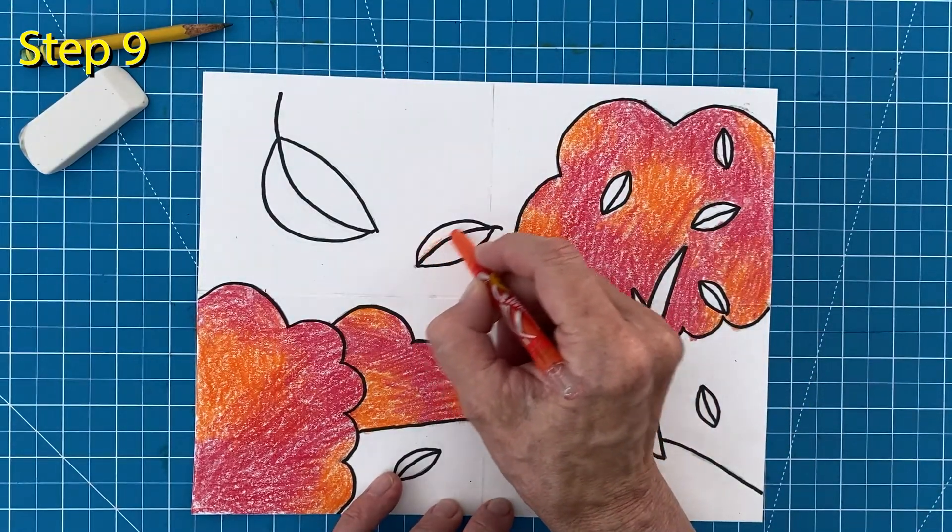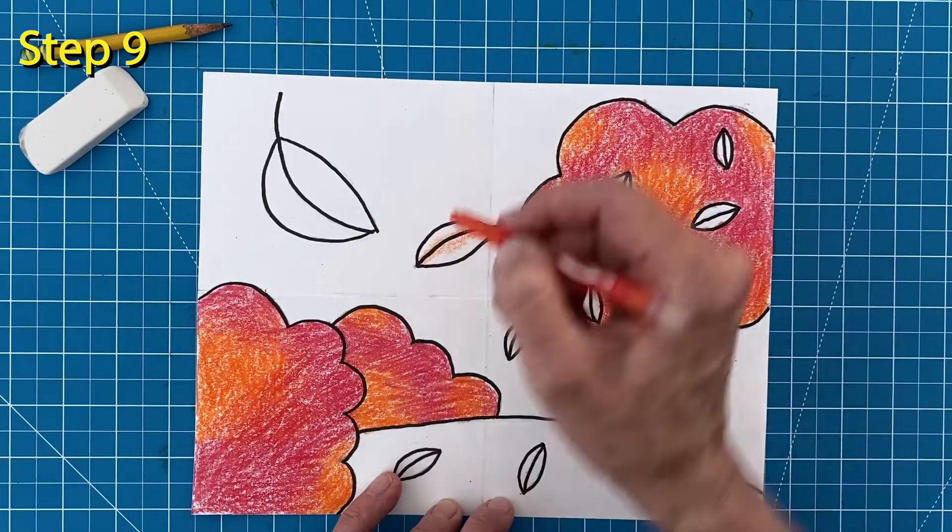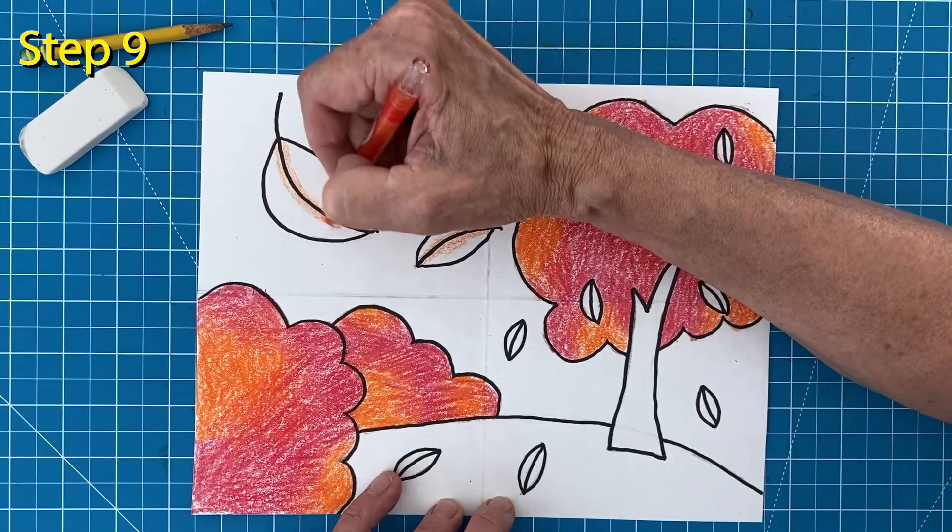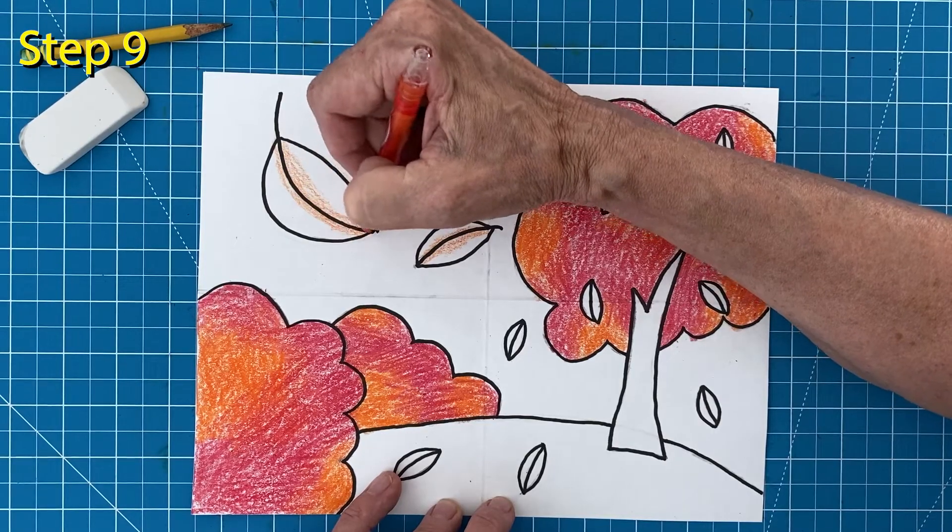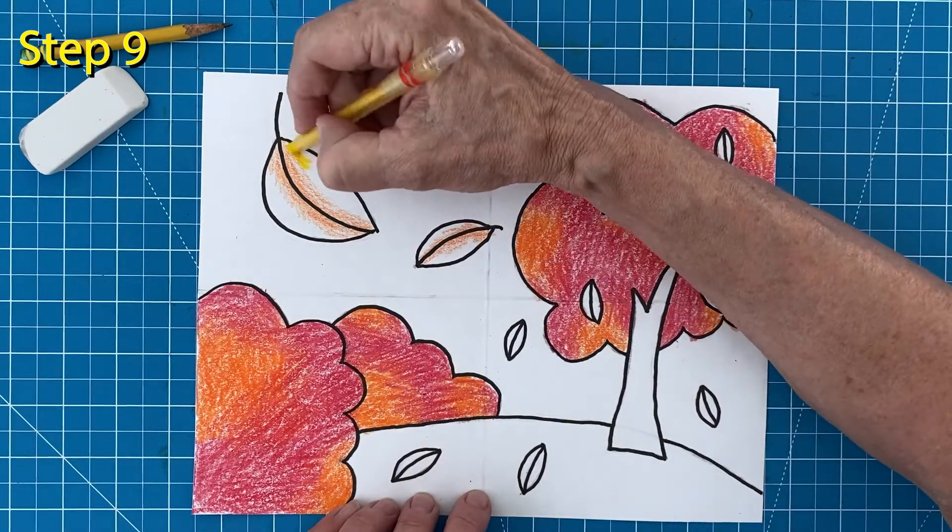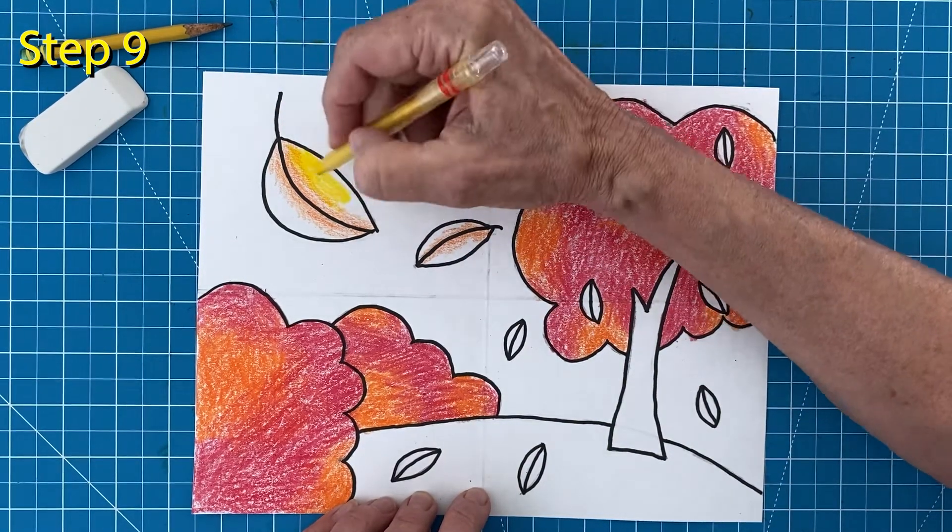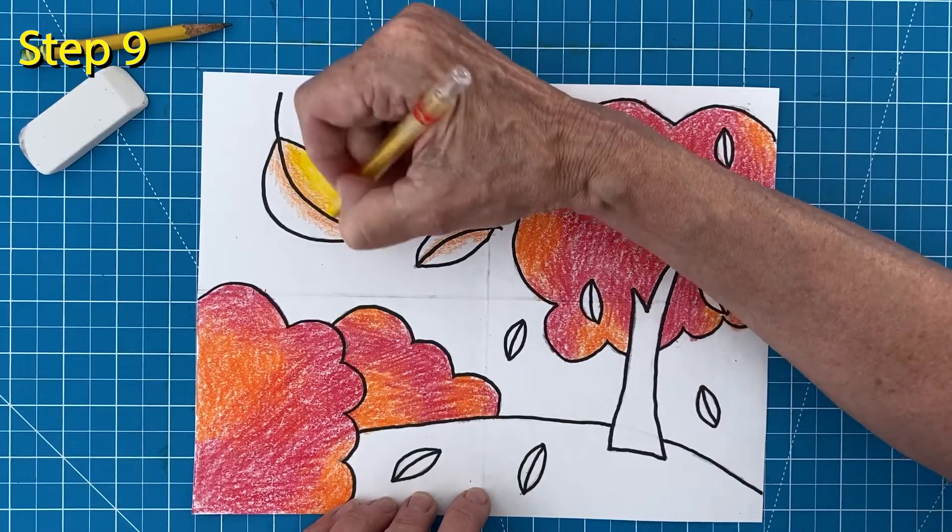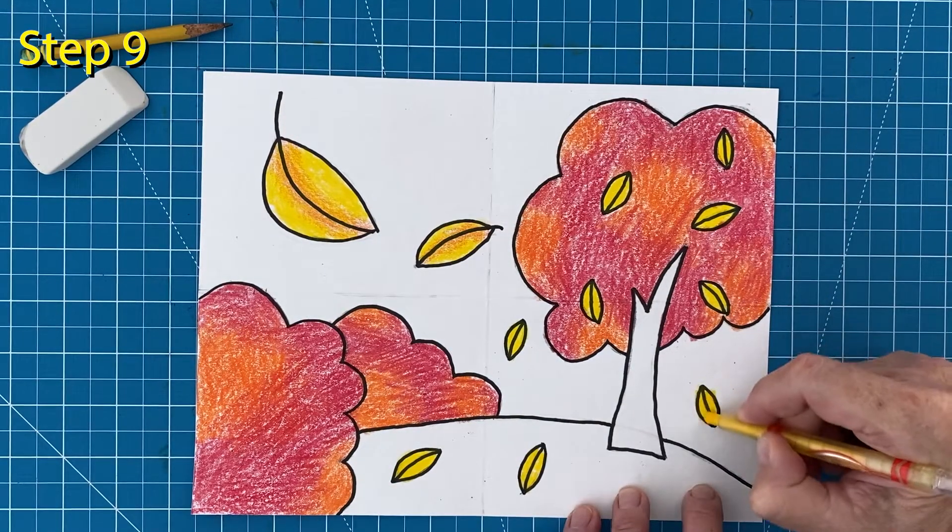Now it's time to color the leaves. I'm going to start with a little orange around the center spine of the larger ones. Then I'm filling in the inside with a golden yellow color. Those really small leaves will look just fine as a bright solid yellow.